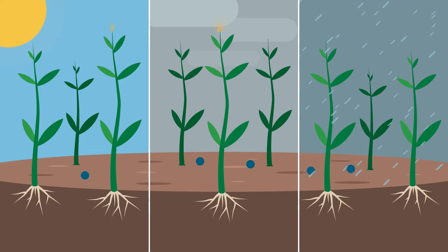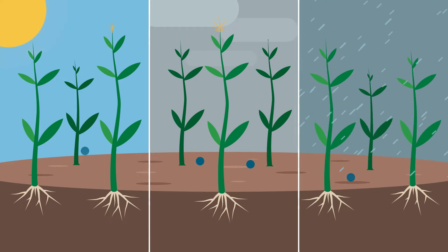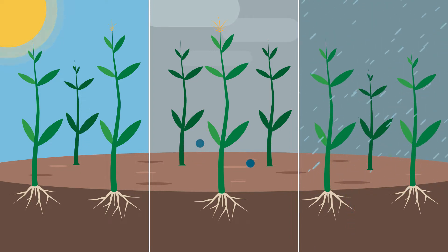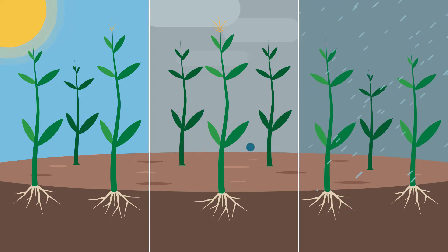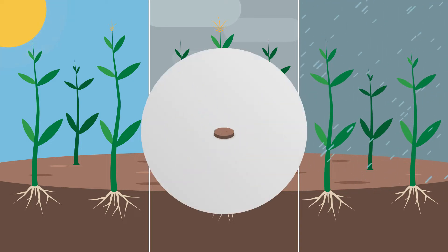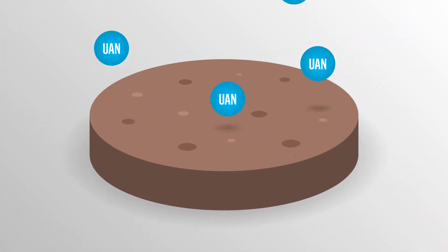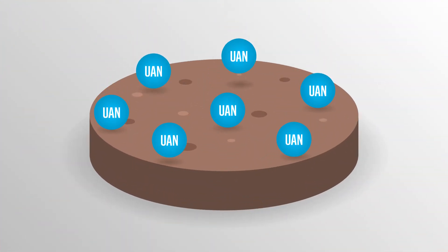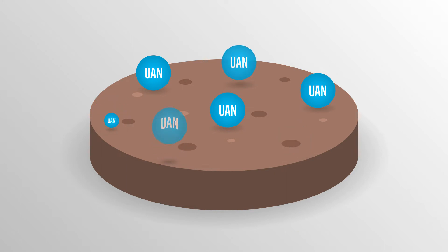These factors, combined with the knowledge that the nitrogen cycle is a natural cycle, means if a grower leaves their UAN unprotected, they could be leaving their nitrogen investment at risk. Bottom line, regardless of how or when UAN is applied, nitrogen loss remains a significant risk that needs to be managed.